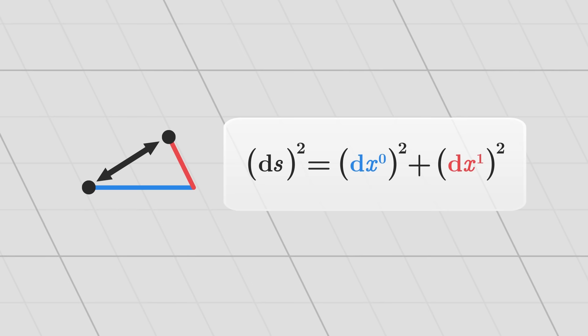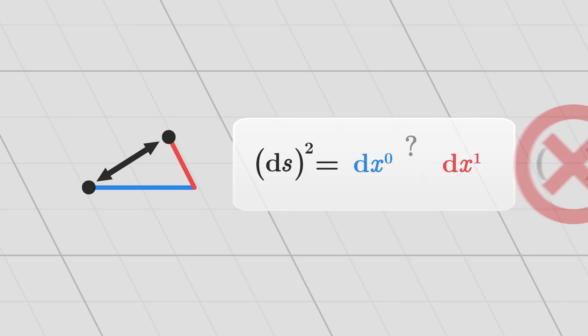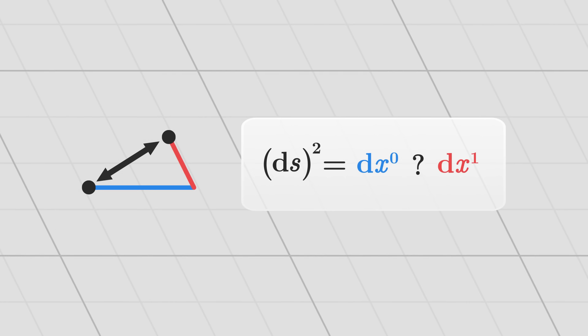But the Pythagorean theorem only applies if the lines form an orthonormal coordinate system. If the grid is stretched in some way, or if its axes are not perpendicular, the Pythagorean theorem no longer works, and we have to find a more general expression which works regardless of the grid we use.